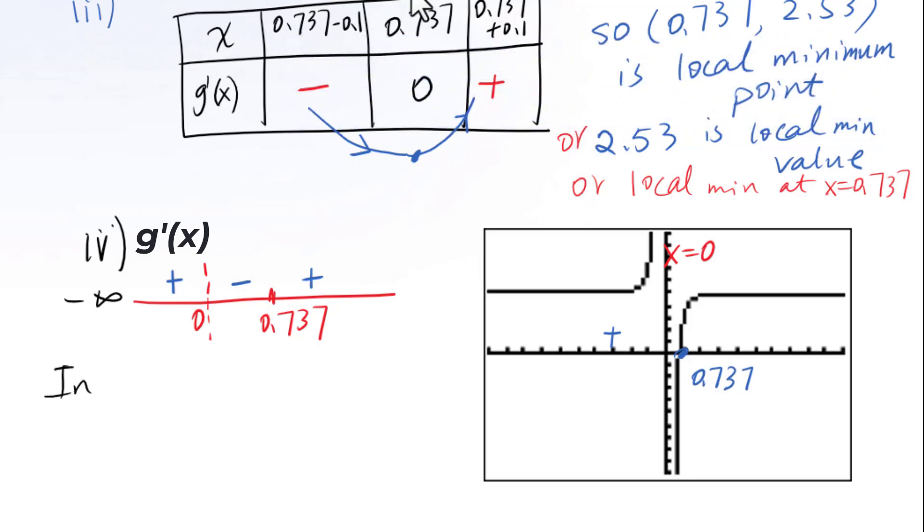This is negative infinity, positive infinity. From negative infinity to 0, union 0.737 to positive infinity, g of x is increasing. Interval from 0 to 0.737, g of x is decreasing.